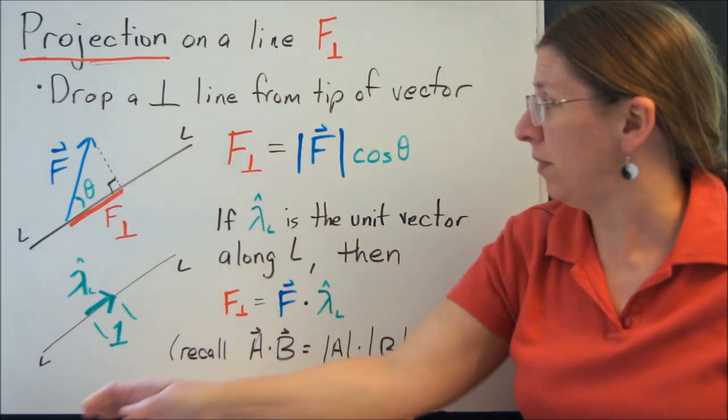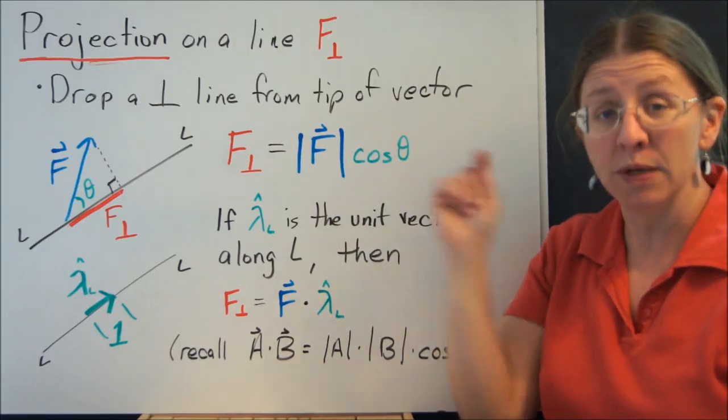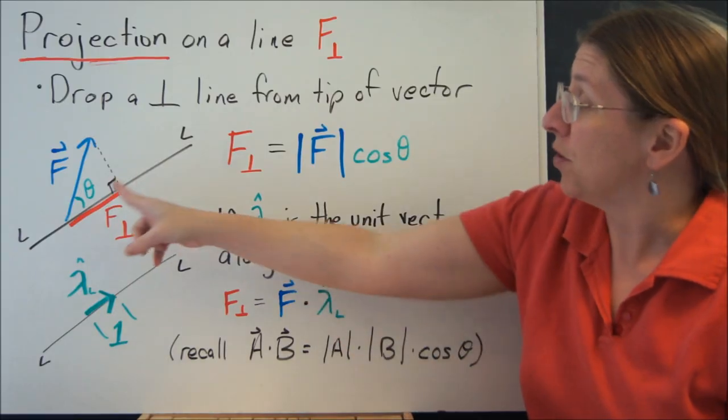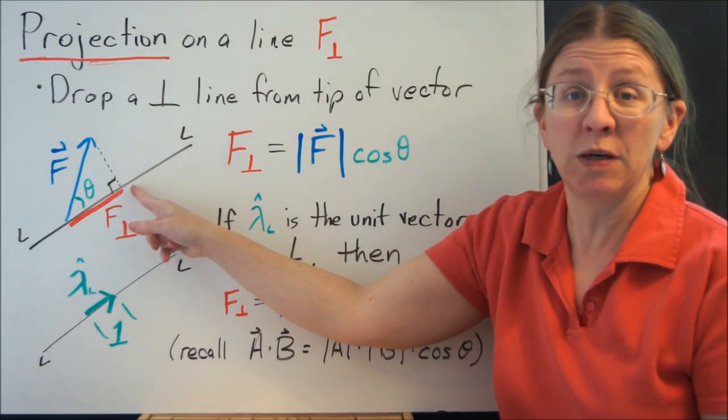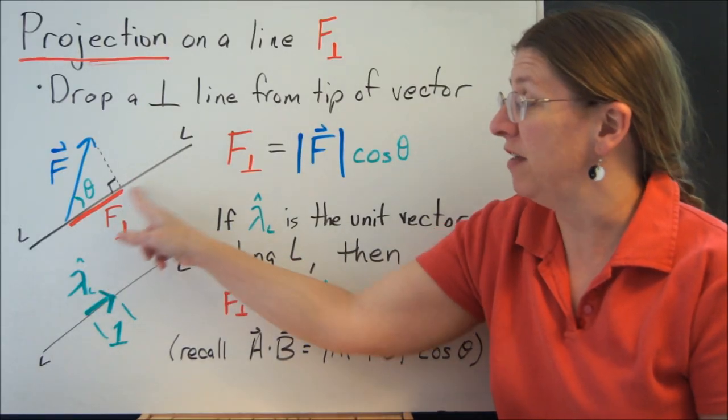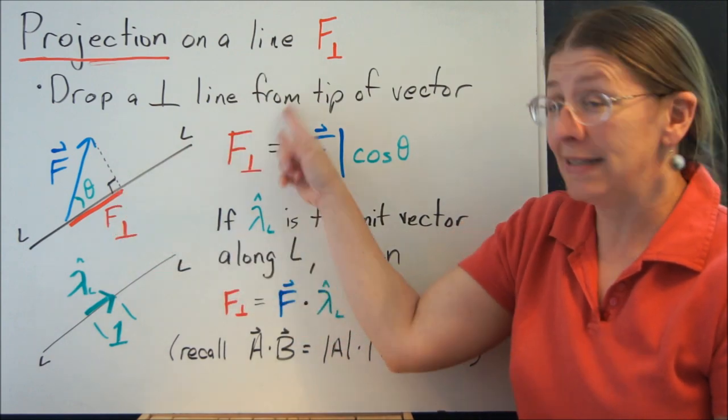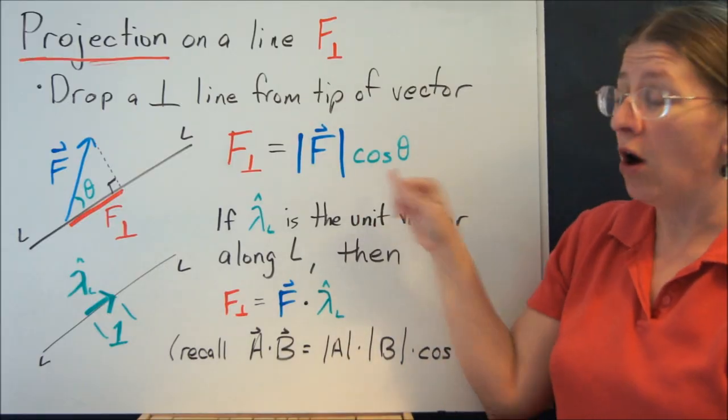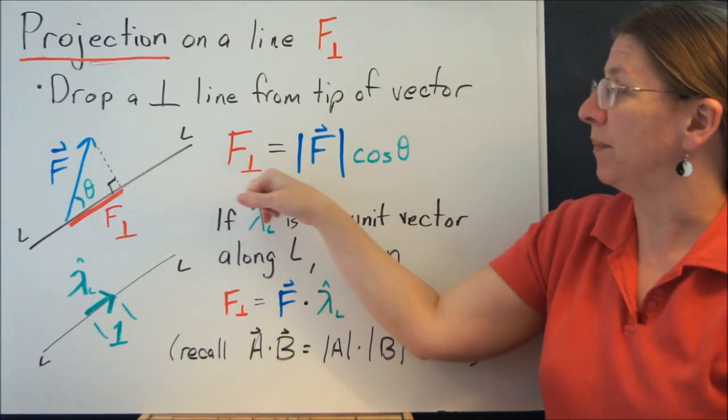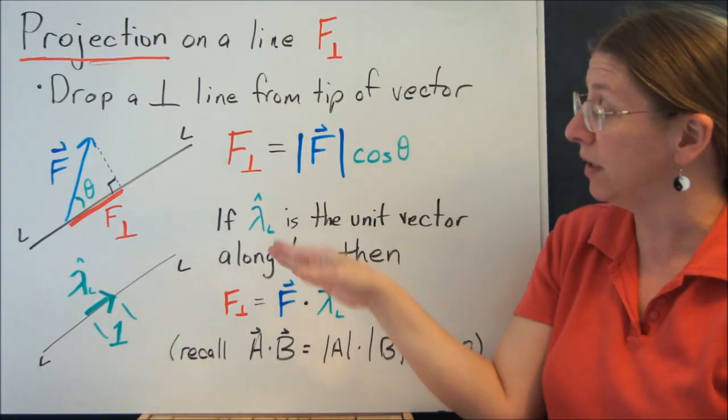What's a projection? A projection onto a line literally says drop the perpendicular from the tip of the vector back down to the line. So if you have this line, you're going to make this a dropped perpendicular to get here. This length is the projection onto the line. By definition, that's always going to be a right triangle. So you're always going to have the perpendicular, the projection onto the line is the magnitude of F times the cosine of the angle in between them.